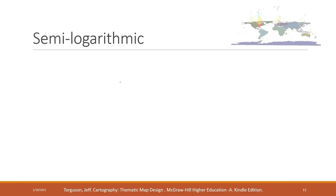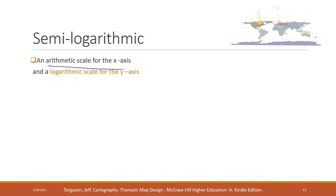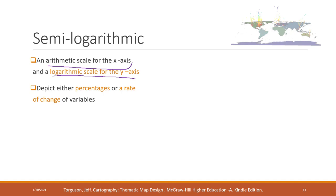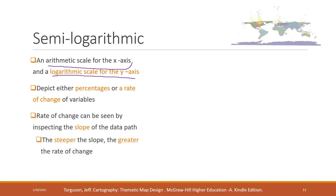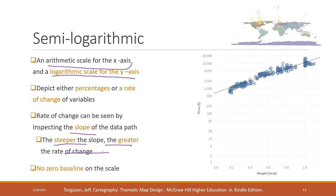Sometimes we may want the semi-log arithmetic scale, which means we use arithmetic scale for the x-axis and logarithmic scale for the y-axis. The reason is that it is a great way to see the percentage rate of change. If you want to see the rate of change, consider using semi-log arithmetic scaling. The rate of change is reflected by the slope — the steeper the slope, the greater the rate of change. In this case, we don't have a zero baseline on the scale.